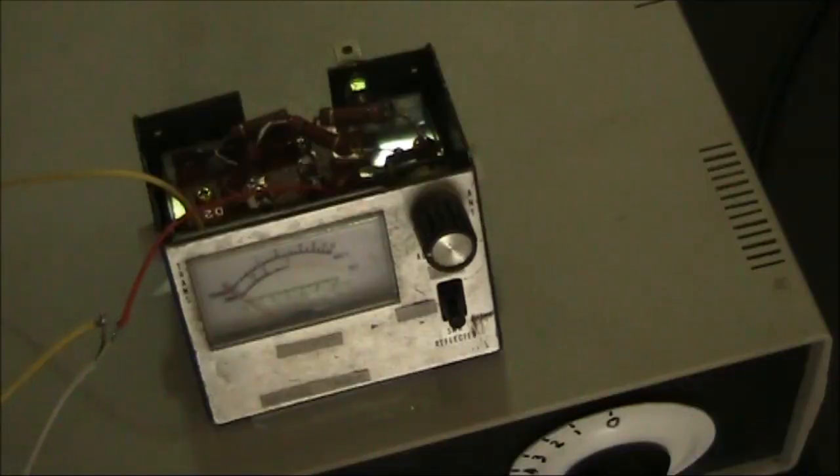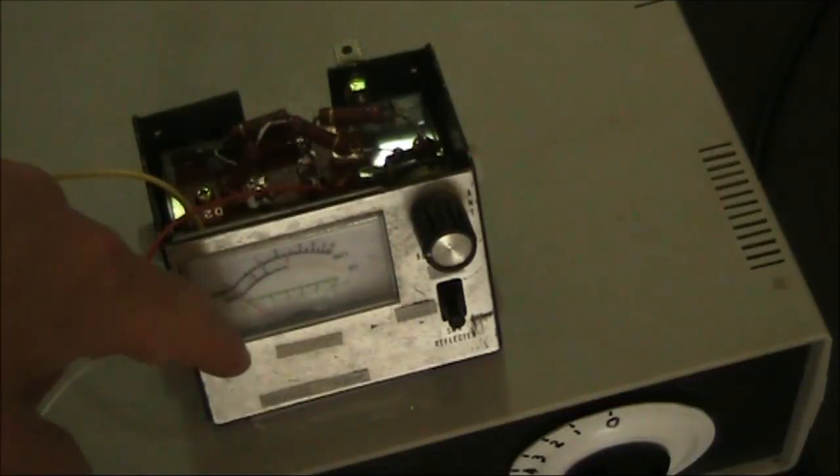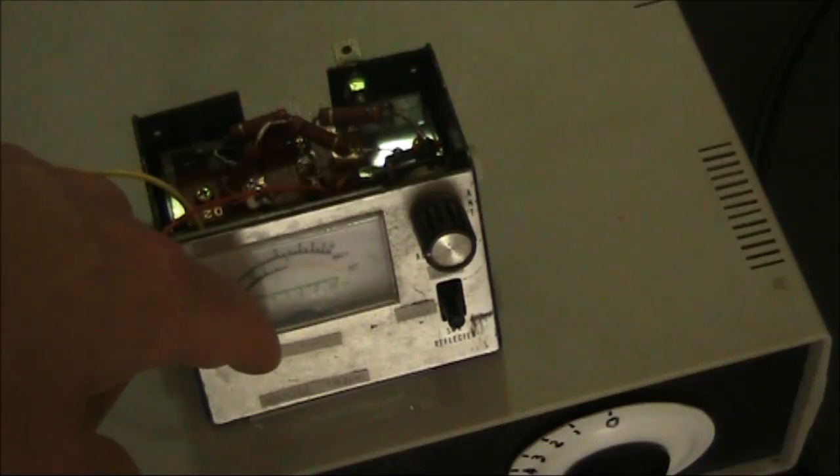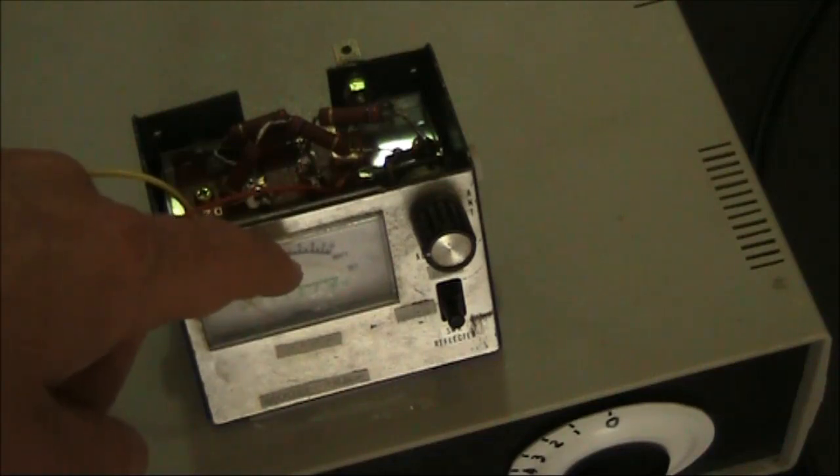If you don't want the transducer wired in permanently, what you could do is just put a 3.5mm socket on the front panel, wired in parallel with the meter. It doesn't matter then, if you've got the transducer plugged in or plugged out, the meter will still function.